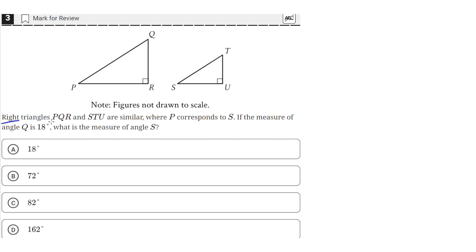Right triangles PQR and STU are similar, where P corresponds to S. If the measure of angle Q is 18 degrees, what is the measure of angle S?